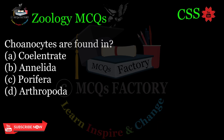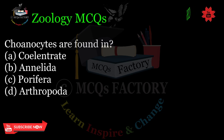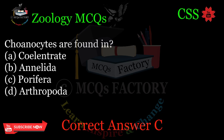Coanocytes are found in? A. Coelenterate. B. Annelida. C. Porifera. D. Arthropoda. Correct answer: C.